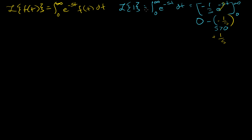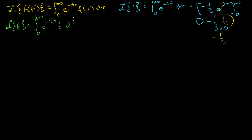Now let's increment it a little bit. Let's see if we can figure out the Laplace transform of t — this is t to the 1. This is going to be equal to the integral from 0 to infinity of e to the minus st times t dt.